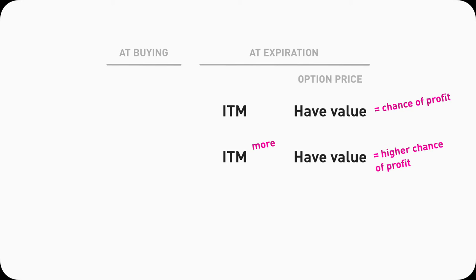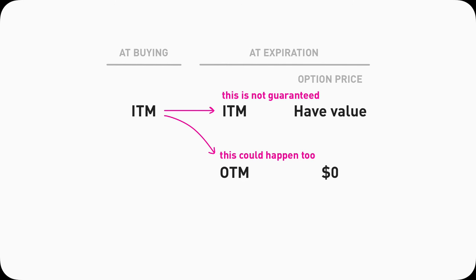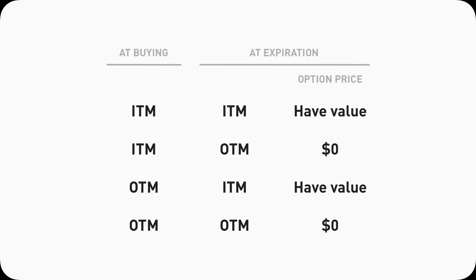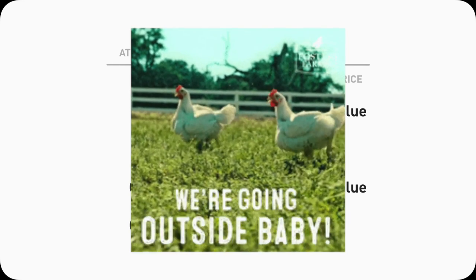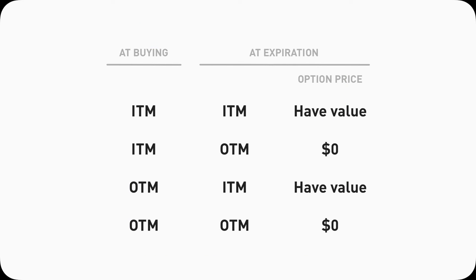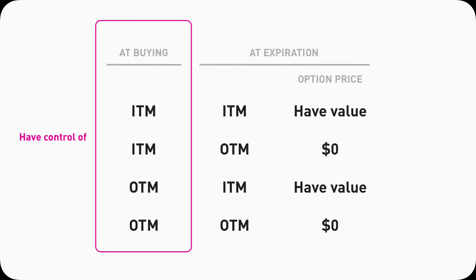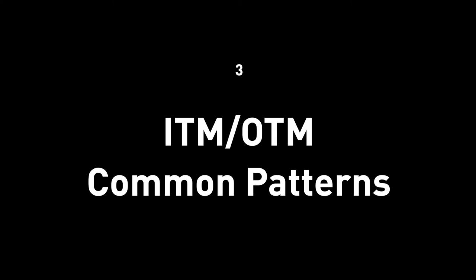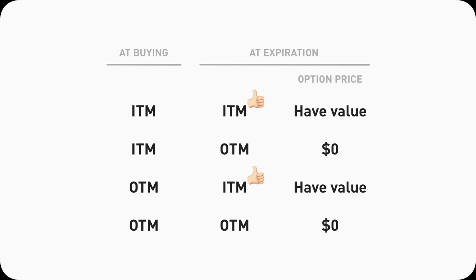As long as I'm a buyer — whether buying calls or puts — having my contract in-the-money guarantees it has value and gives me the highest chance of making a profit. However, when you buy in-the-money it does not guarantee that at expiration it will stay in-the-money. When you buy out-of-the-money, it doesn't mean it will always stay out-of-the-money either. While you're holding the contract, it can start in-the-money, then go out-of-the-money, and maybe end up back in-the-money again — it's like a free-range chicken that you have no control over. The only thing you can control is the starting point, the moment that you buy it. So what can you do? That's a perfect segue to the common patterns.